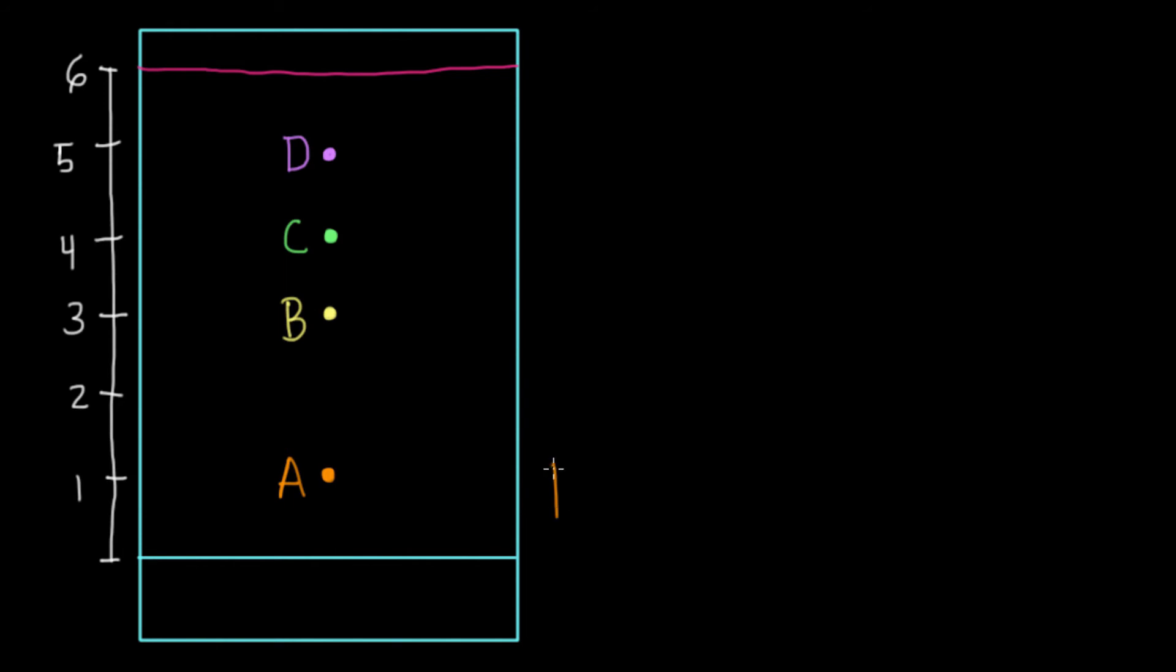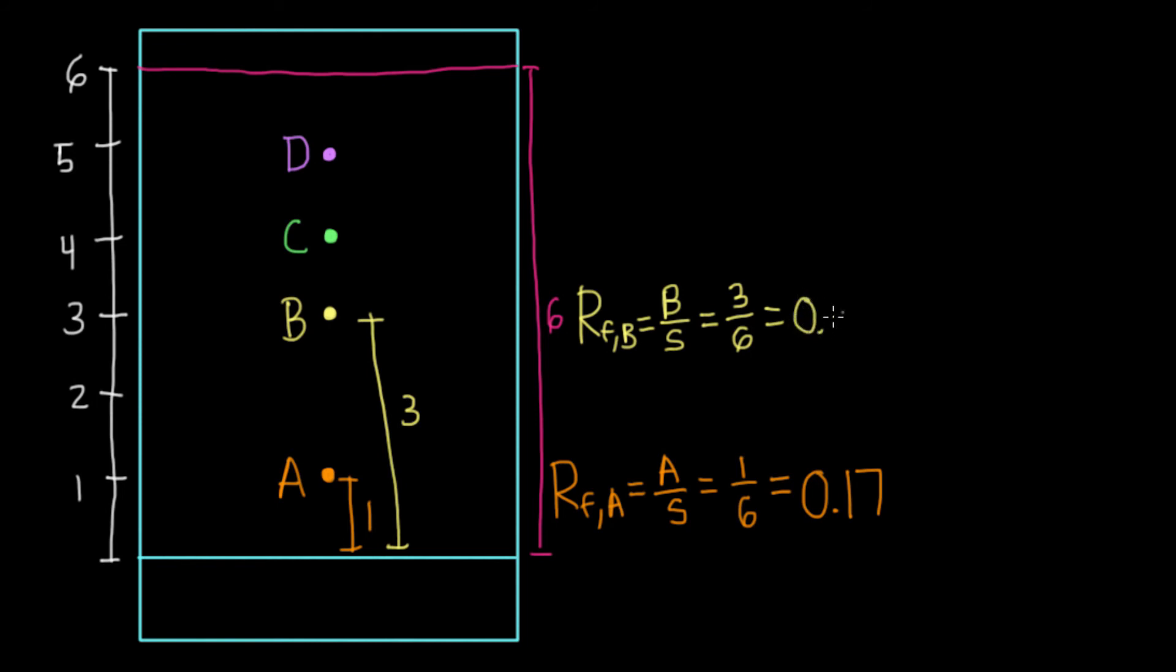So let's calculate the RF of A. This is equal to the distance traveled by A over the distance traveled by the solvent. We can see that A has traveled one unit, so it's equal to one over six. Let's convert that to decimals, and you have 0.17. We can do the same for each of these compounds. Next, we'll take B. This is again equal to B over S, which equals, this distance is about three units, so we have three over six, which is equal to 0.50.